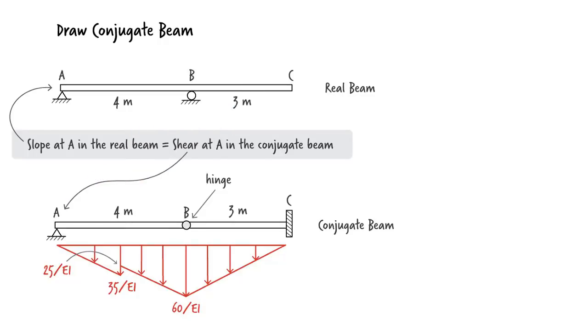By the way, the shear at A is the same as the vertical reaction at A, so we need to calculate the vertical reaction at A. Since there is a hinge at B, the quickest way to solve the problem is to cut the beam at the hinge, draw the free body diagram for segment AB,